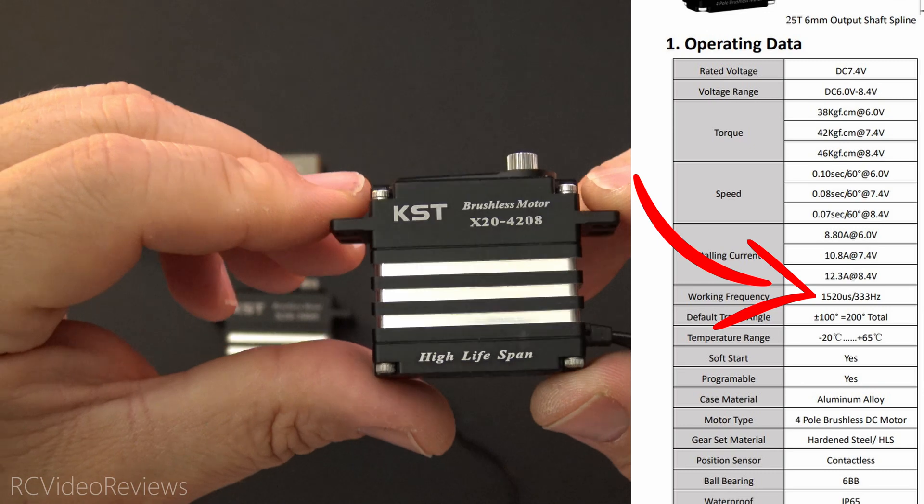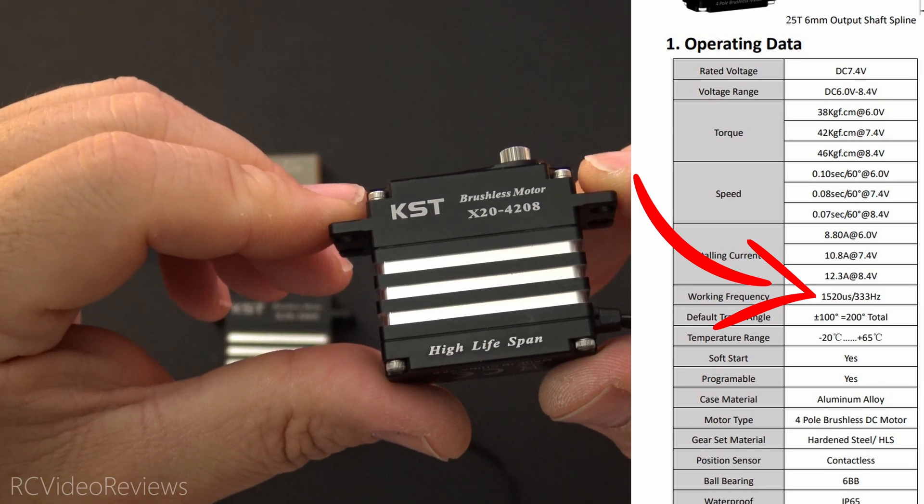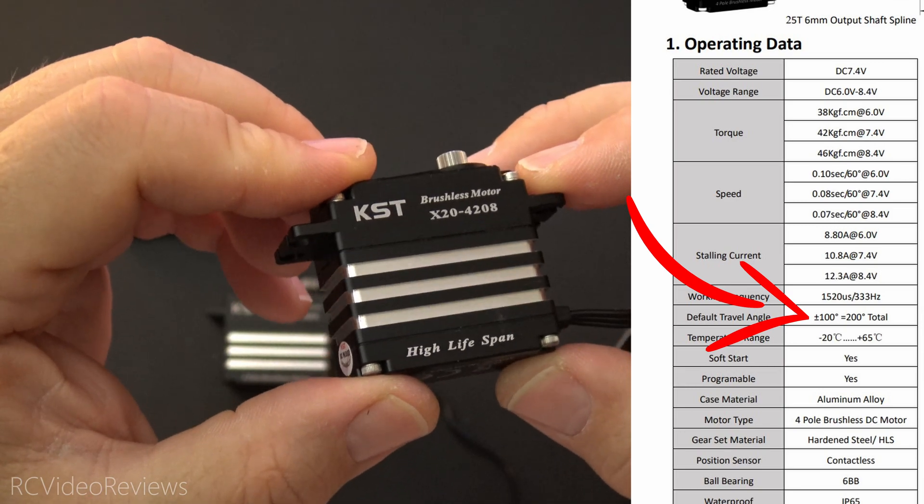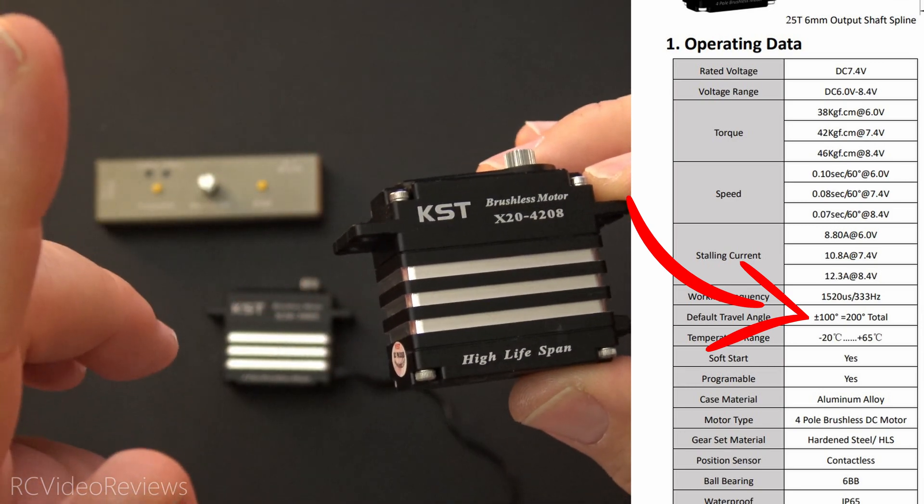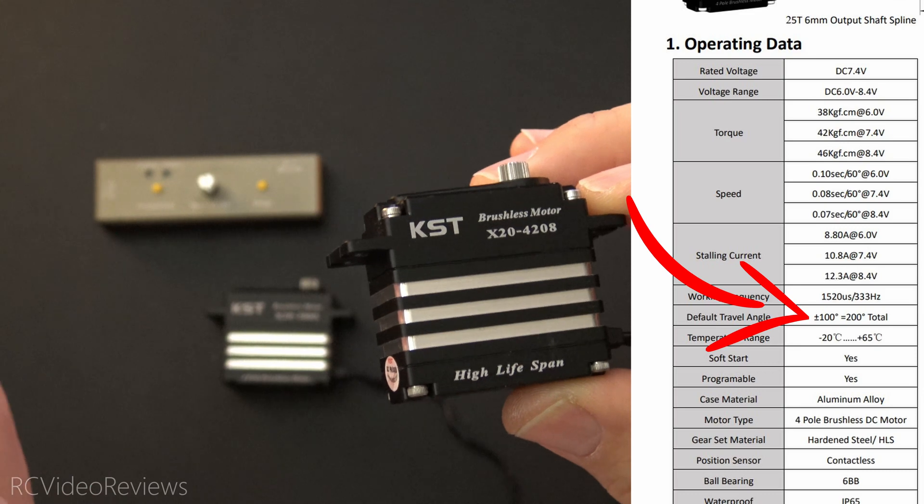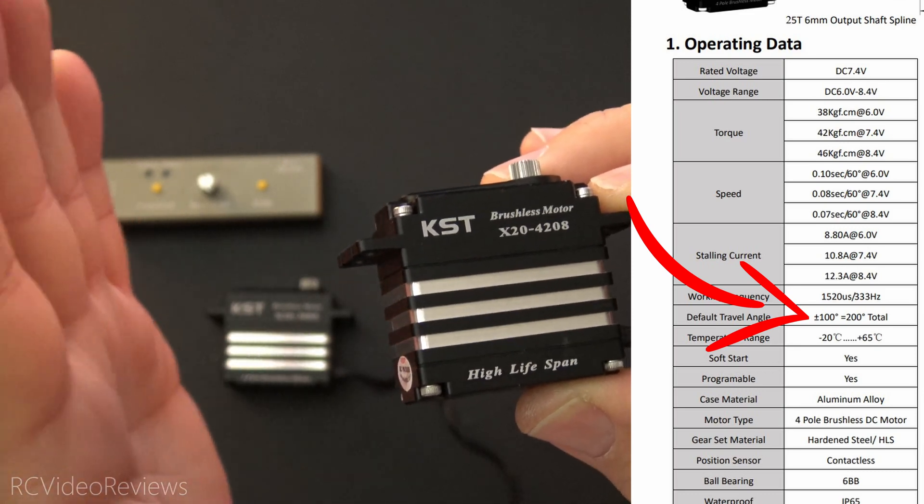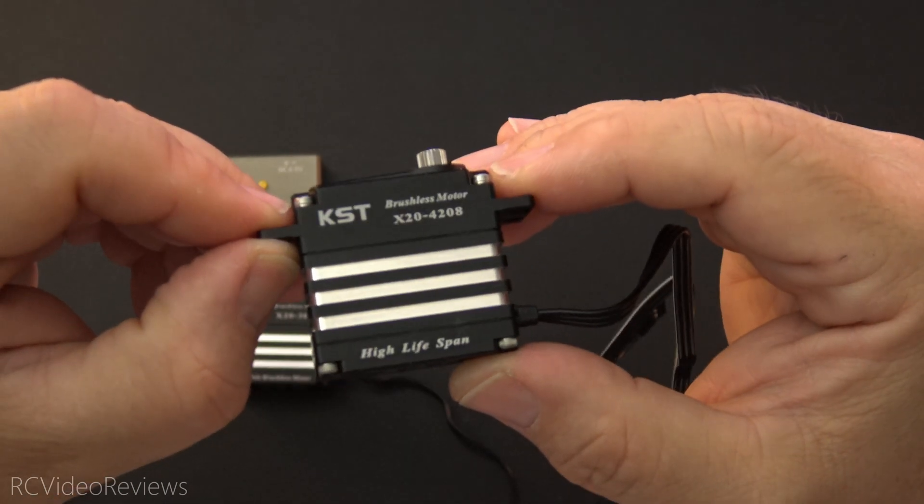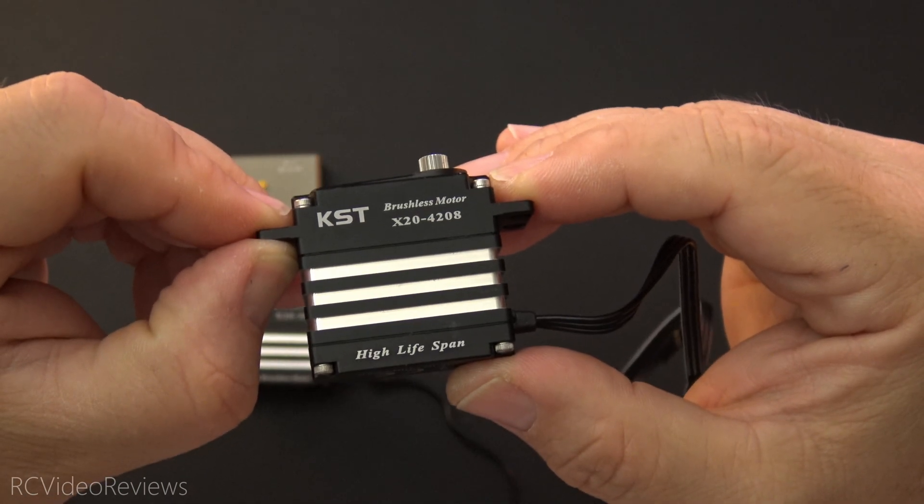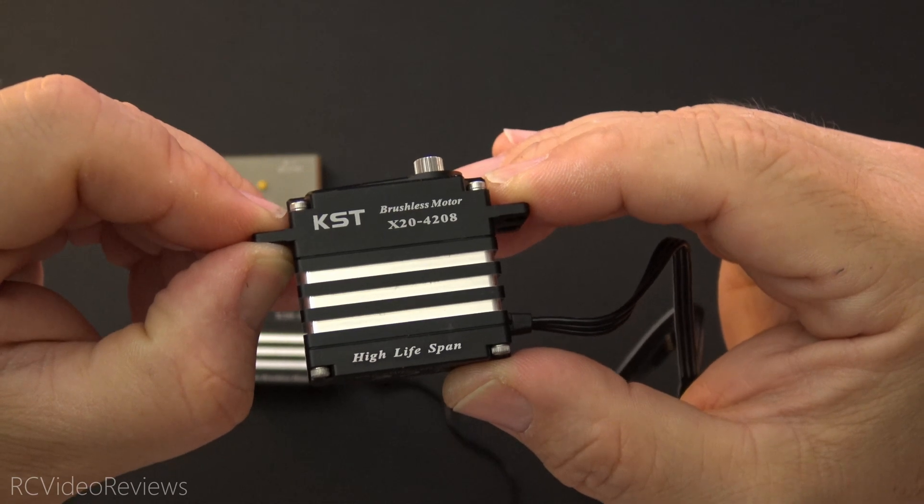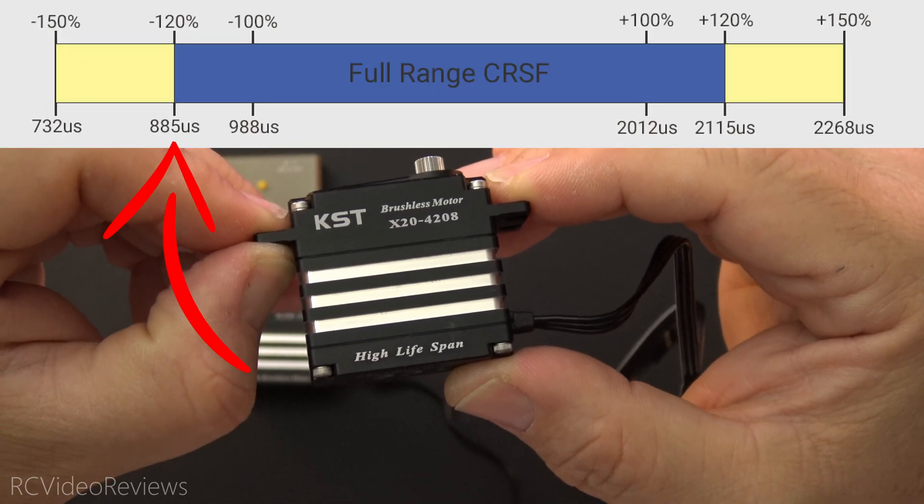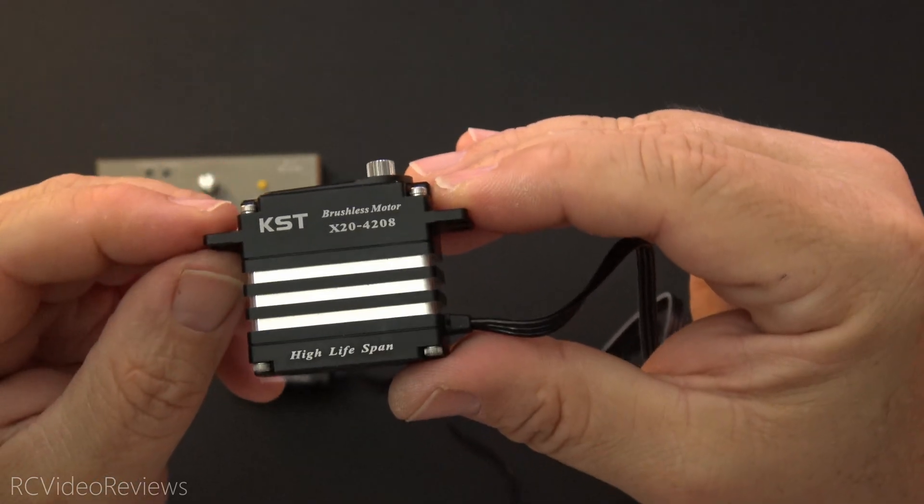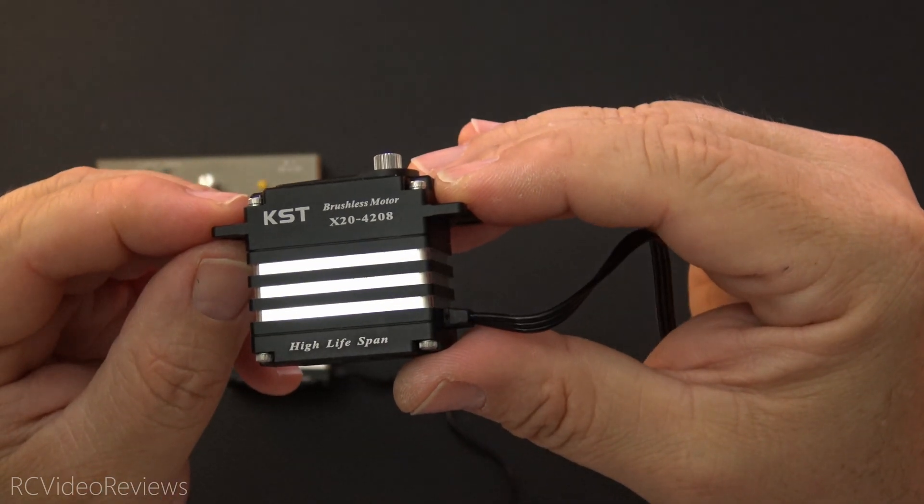This servo has a travel range of 200 degrees total, but you'll need a protocol that supports a pulse width range from 500 microseconds on the low end to 2500 microseconds on the high end. I'll be using ExpressLRS in this particular setup, and that uses CRSF as a protocol, which means I have an 885 microsecond limit on the low end, and I can go up to 2115 on the high end. So I can't fully exploit the 100 degrees of travel on both sides of center, but I do get a little bit of a bump over the standard 1000 to 2000 range.